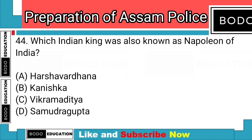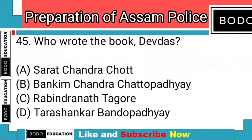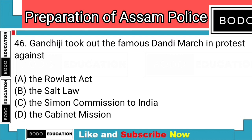Question number 44: Which Indian king was also known as the Napoleon of India? Answer: Option D — Samudragupta. Question number 45: Who wrote the book Dashakumaracharita? Answer: Option A — Dandin. Question number 46: Gandhi took out the famous Dandi March in protest against? Answer: Option B — the Salt Law.